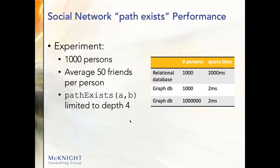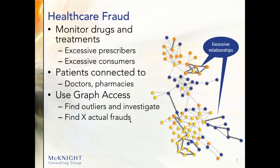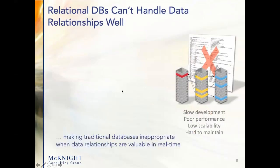Here's an example with heterogeneous nodes — healthcare fraud. We're monitoring drugs and treatments, with prescribers, consumers, and different-looking vertices with different edges. Patients are connected to doctors and pharmacies. We're trying to find excessive relationships — doctors who are over-prescribing certain drugs — which is pretty important. Graph databases are used to look at which relationships are well beyond the norm, and those are the relationships the company wants to drill into.